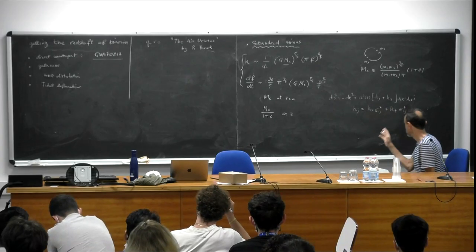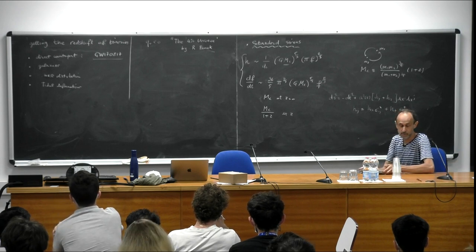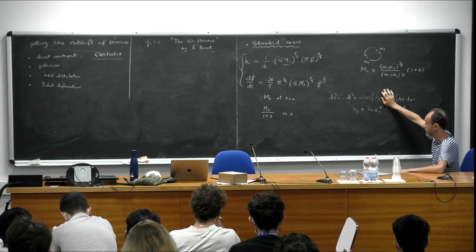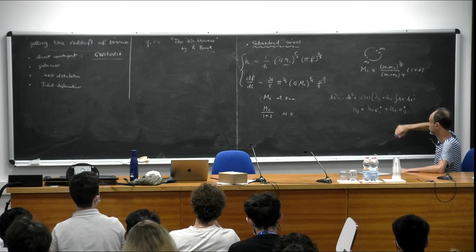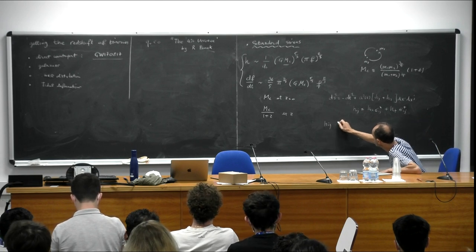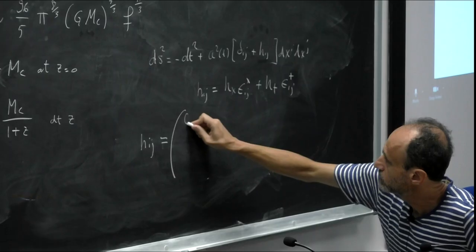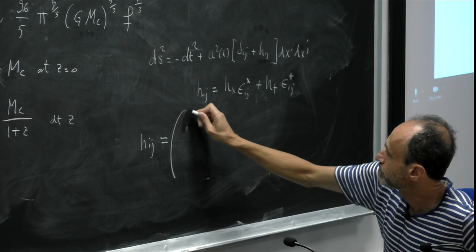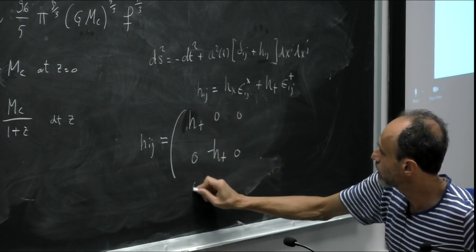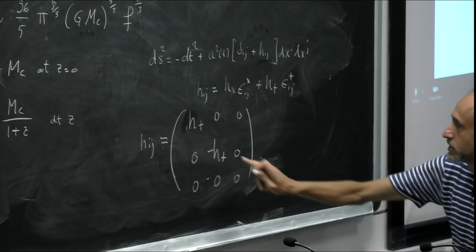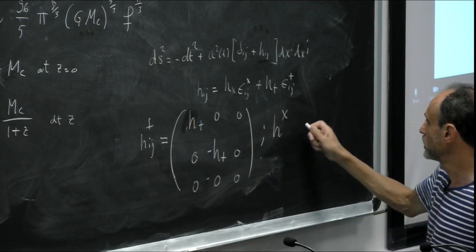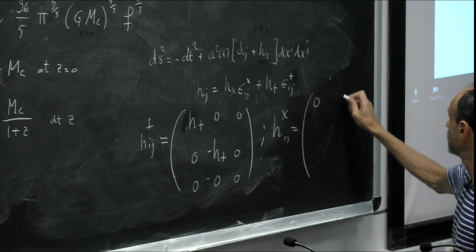The strain describes the amplitude of the gravitational wave. Assume we have a flat Friedmann universe. The metric has a perturbation which is traceless and transverse. If the wave travels along the z-direction, the plus polarization and the cross polarization can be written explicitly in the metric components. This is what you see in the interferometer.